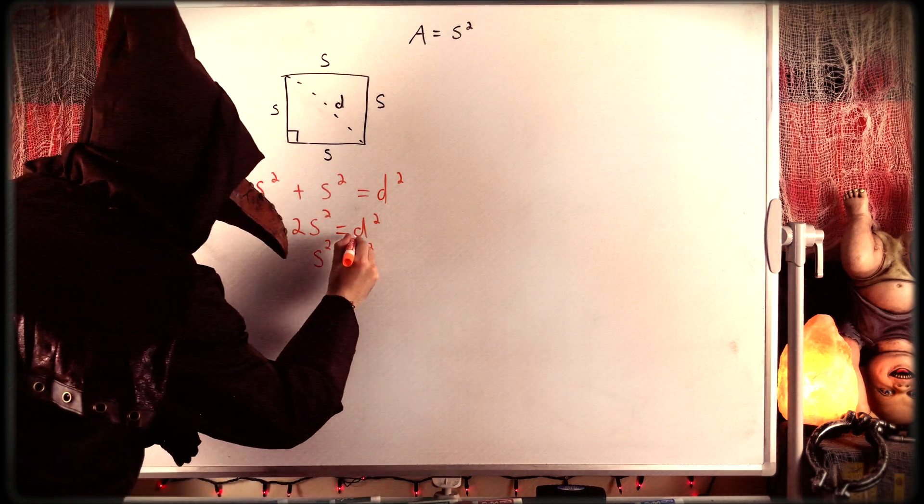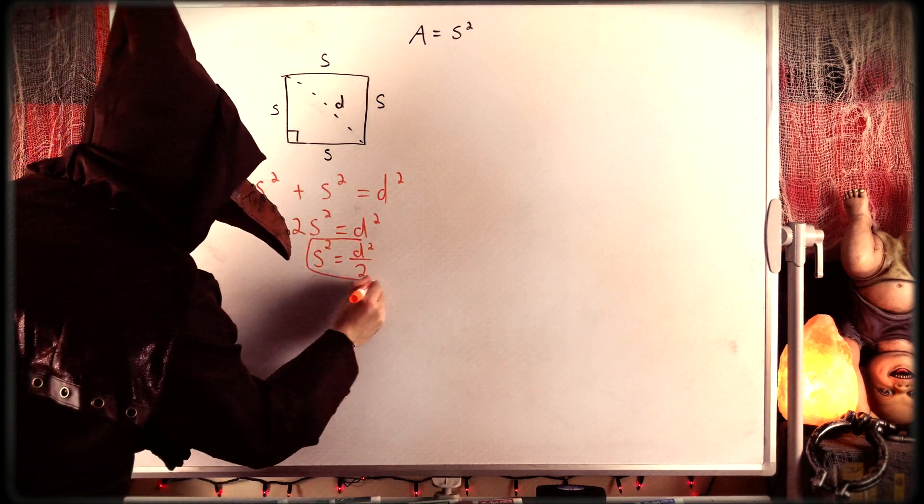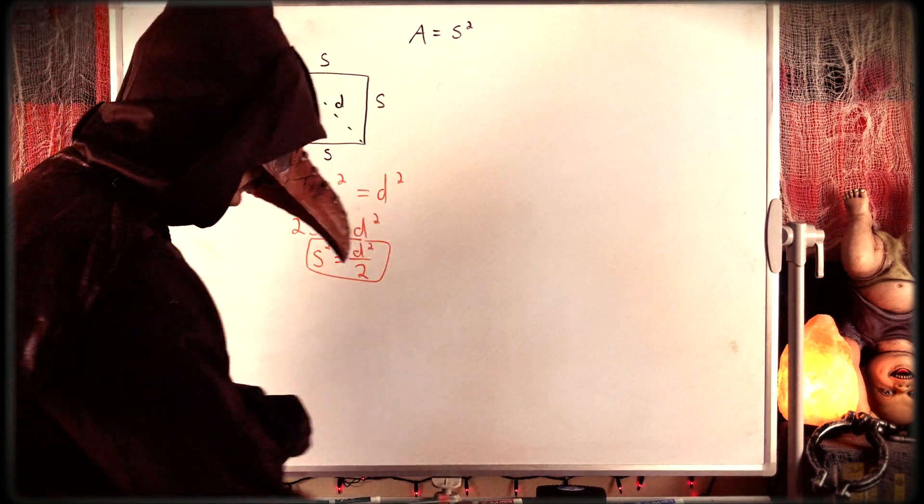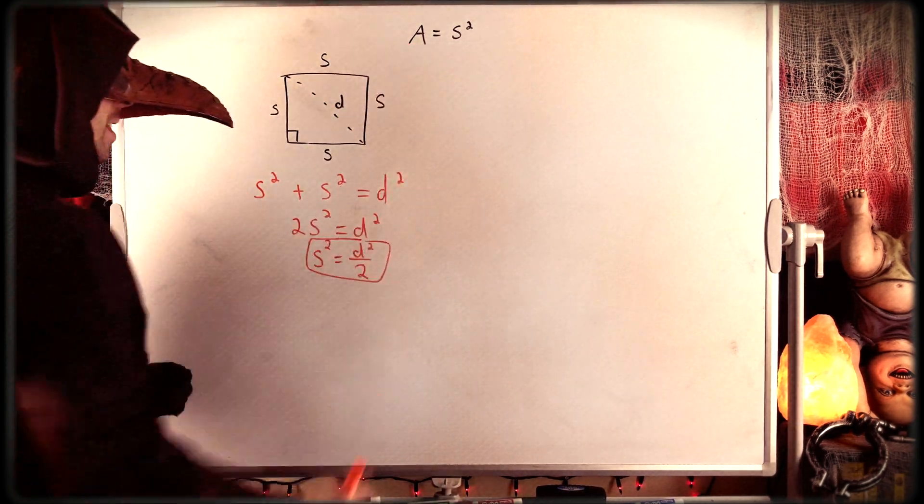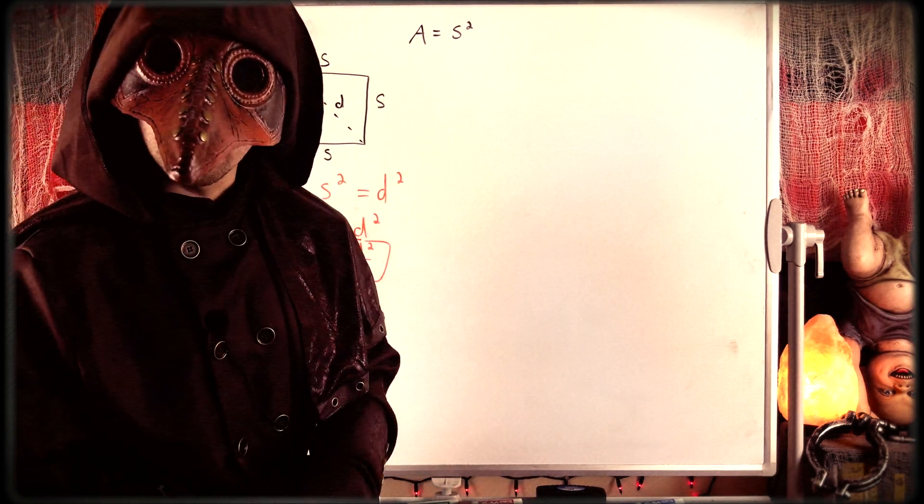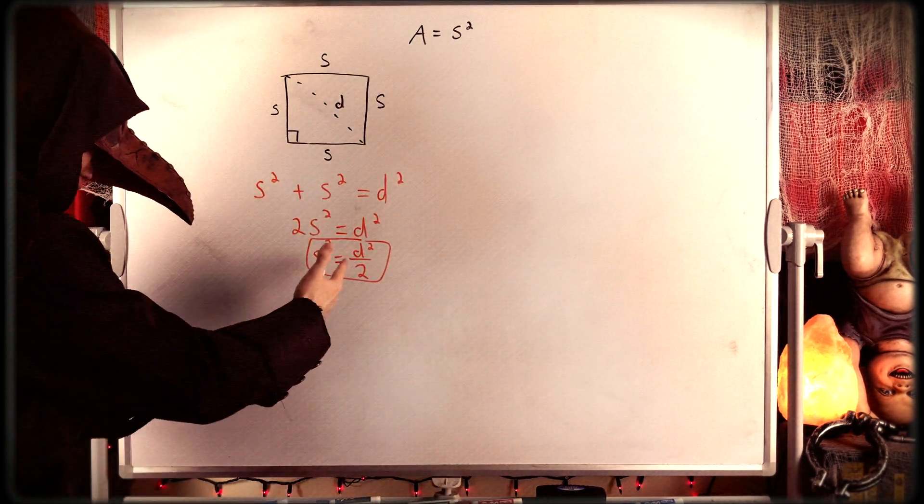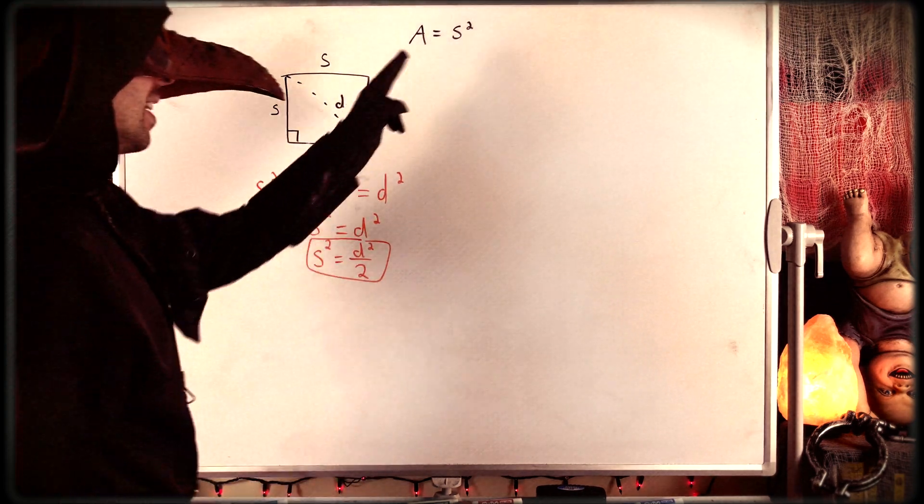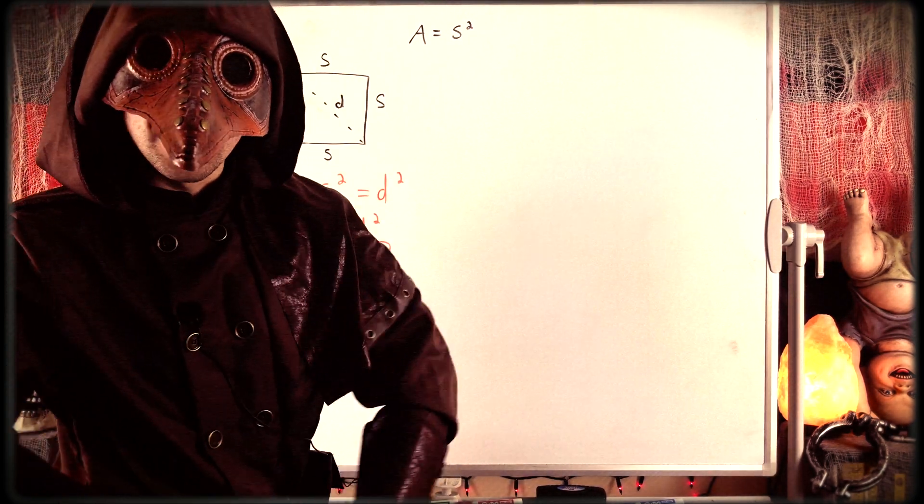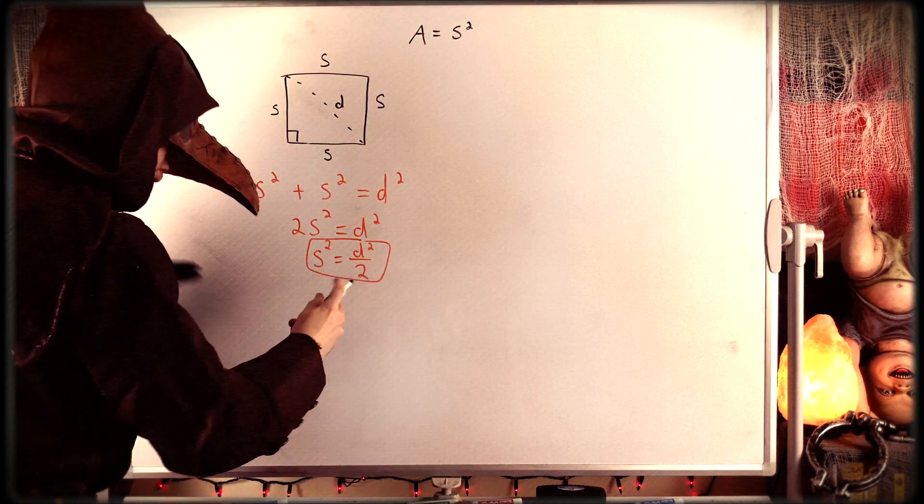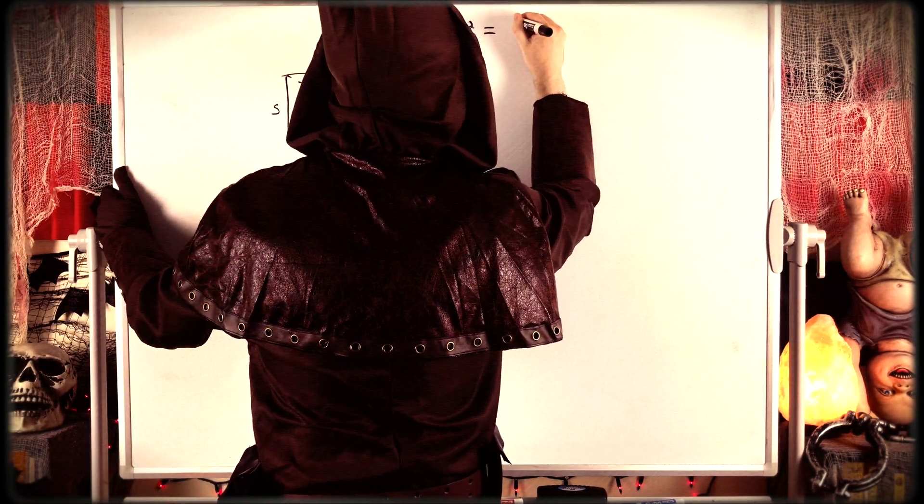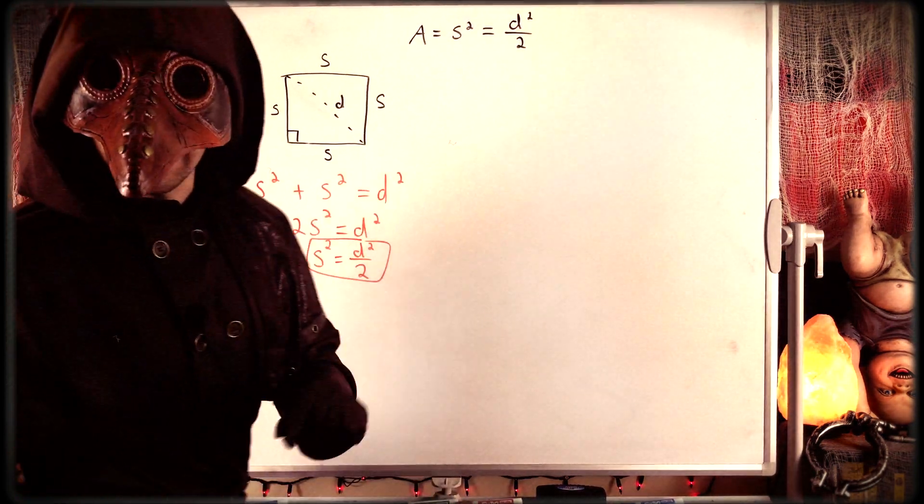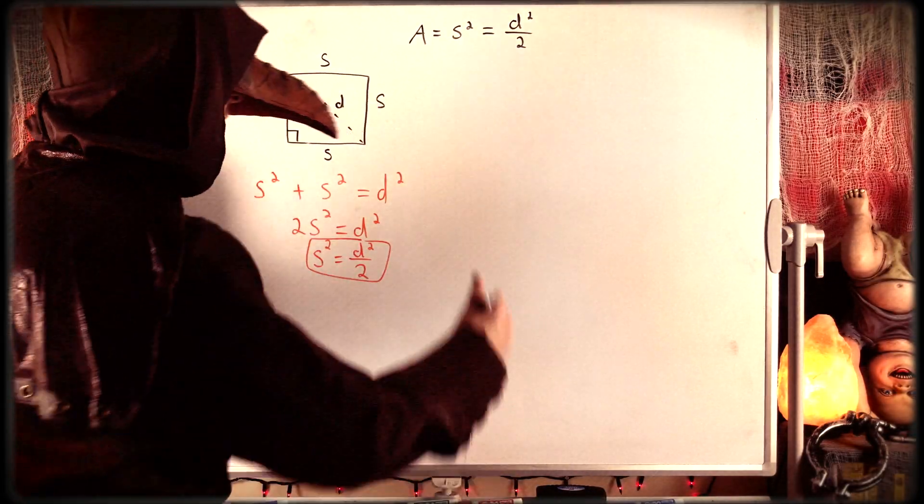Now you might be tempted to take the square root of both sides of this equation in order to solve for S. However, remember that S squared is the area of the square. So S squared is what we're really interested in, and we can just stop there. The area of a square is equal to the square of the side length, which we've just shown is equal to the diagonal of the square squared divided by 2.